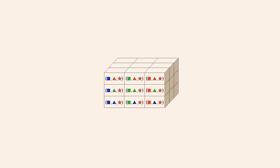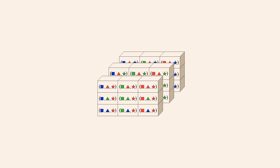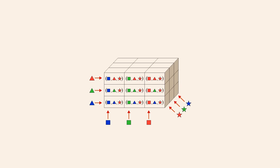This grid of ordered triples is a simple three-dimensional coordinate system. A left-to-right position in the grid can be specified by the color of square, a bottom-to-top position by the color of triangle, and a back-to-front position by the color of star. So by specifying the colors of square, triangle, and star, we can locate any position within this three-dimensional grid.